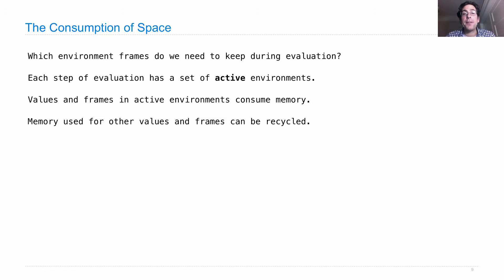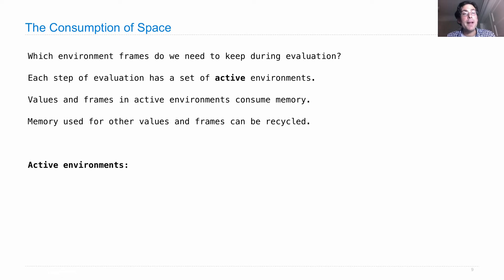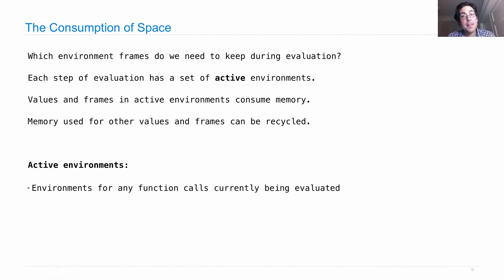Memory used for values and frames of functions that have already returned — that memory can be recycled or reused. So even though we draw lots of frames, when a function returns, we don't usually need that frame anymore unless it's active. Active frames are ones for function calls that are currently being evaluated, meaning those functions haven't returned yet.